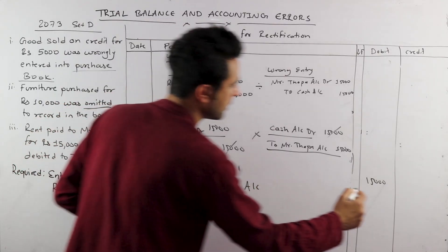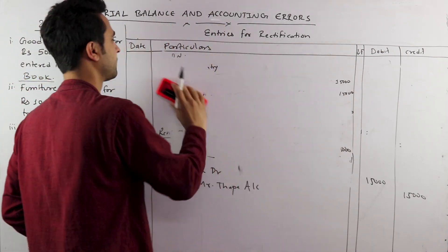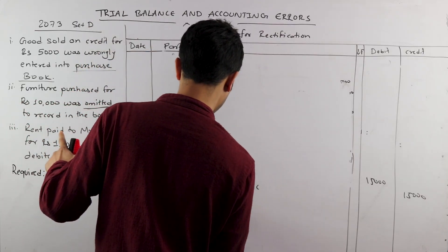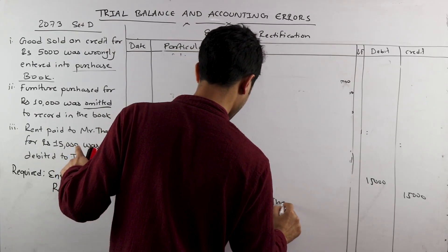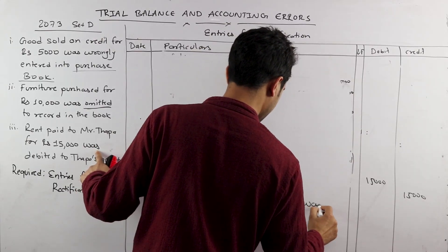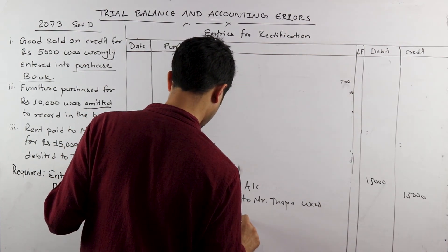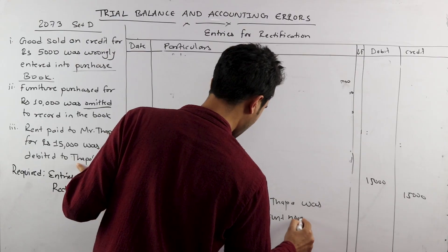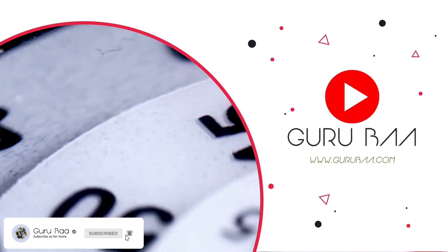Write the narration — without narration it is incomplete. Being rent paid to Mr. Thapa — was debited to Thapa account — now rectified. Complete the journal entry with the narration.